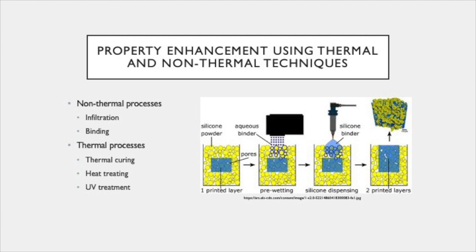Some common processes which use thermal techniques are DED and PBF techniques for metal parts. Some major desirables when making parts are specific microstructures and to relieve as much residual stress as possible. These heat treatments, while they can greatly enhance mechanical properties, must also be designed carefully due to the factor of shrinkage that could occur in some processes. Since each alloy or metal has different properties, specific processes have been developed for each metal or alloy.